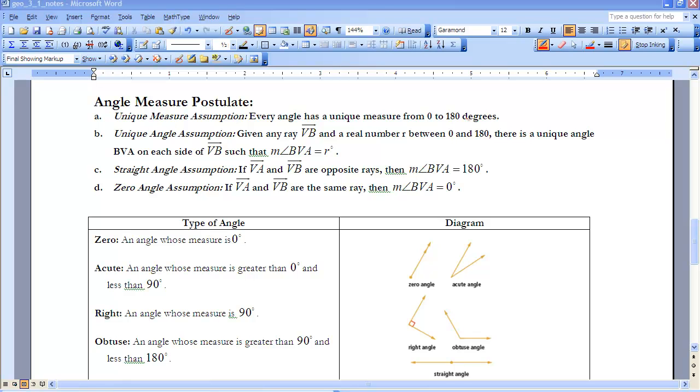The first one, unique measure assumption. So basically, every angle has a unique measure from 0 to 180 degrees. When you look at angles, you often think, well, why can't we go the other direction? Here's our assumption. We're always operating under the assumption that everything is between 0 and 180 degrees.